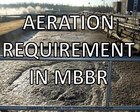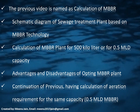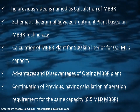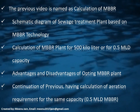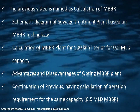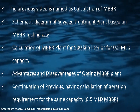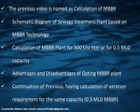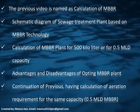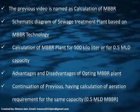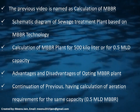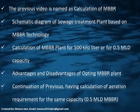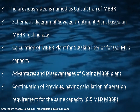Before going into detail, I would request you to visit Part 1 of MBBR. In the summary of Part 1, the previous video contained the schematic diagram of a sewage treatment plant based on MBBR technology, calculation of the MBBR plant for 500 KLD or 0.5 MLD capacity, and the advantages and disadvantages of MBBR. In continuation of that video, this video covers the calculation of aeration requirement for the same 500 KLD capacity MBBR plant.